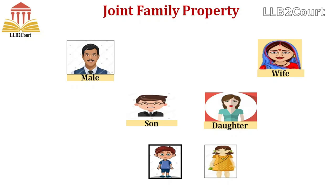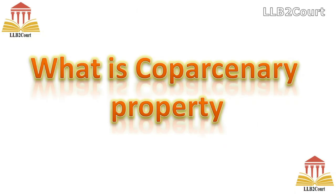Under Section 6.1 of the Hindu Succession Amendment Act 2005, a daughter is made a coparcener. Coparcenary property is property inherited by a person from his father, father's father, or father's father's father, or property allotted at a partition in his ancestral property. In this property, his own son, son's son, or son's son's son acquires an interest by birth as coparcenary rights. It includes ancestral property, acquisitions made by coparceners with the help of ancestral property, joint acquisitions of coparceners, and separate property of coparceners thrown into common stock.